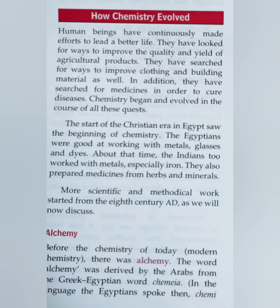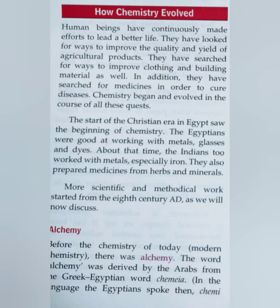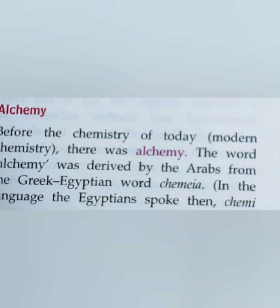The Egyptians were good at working with metals, glasses, and dyes. At the same time, Indians worked with metals — especially iron — and prepared medicines from herbs and minerals, which we call Ayurveda or Siddha. These were ancient methods of medicine. Before modern chemistry, there was alchemy. The word alchemy was derived by the Arabs from the Greek-Egyptian word Kemea, meaning black or aged. Alchemy was practiced by Arabic people, Greeks, and Egyptians between the 8th and 16th century AD. The alchemists had two main aims: converting cheaper metals into gold, and searching for the elixir of life.